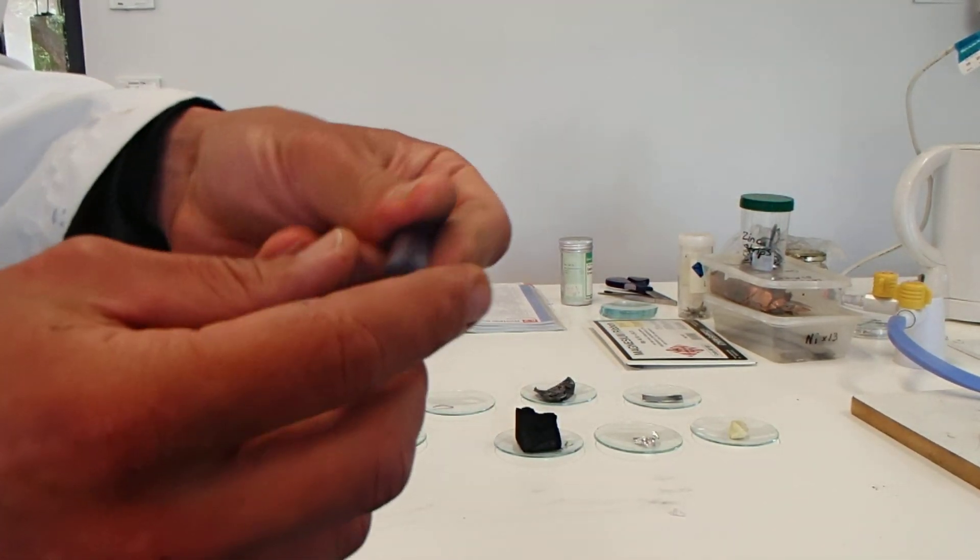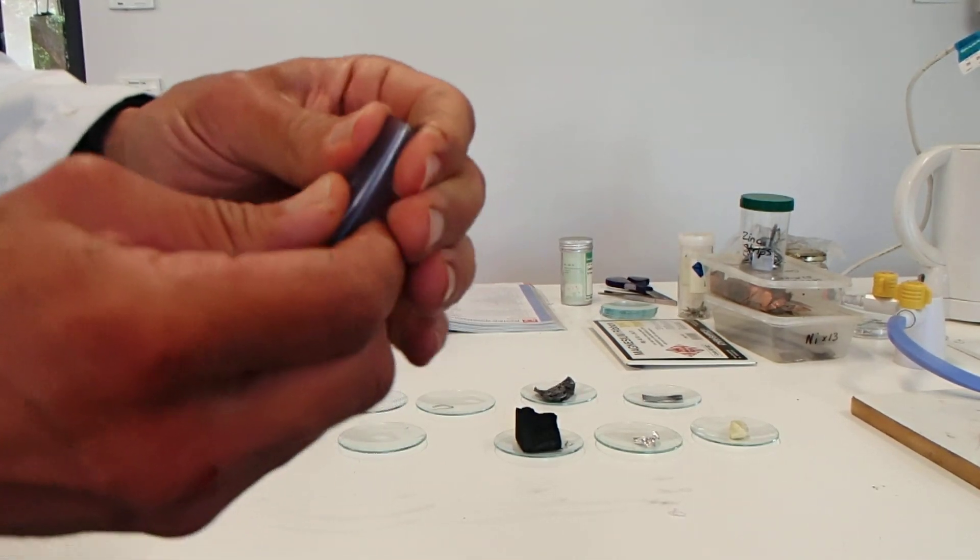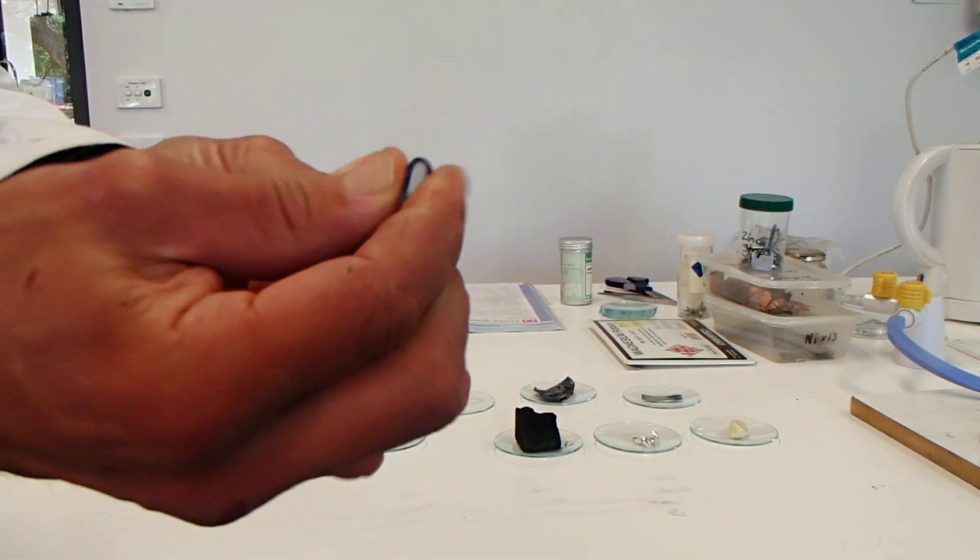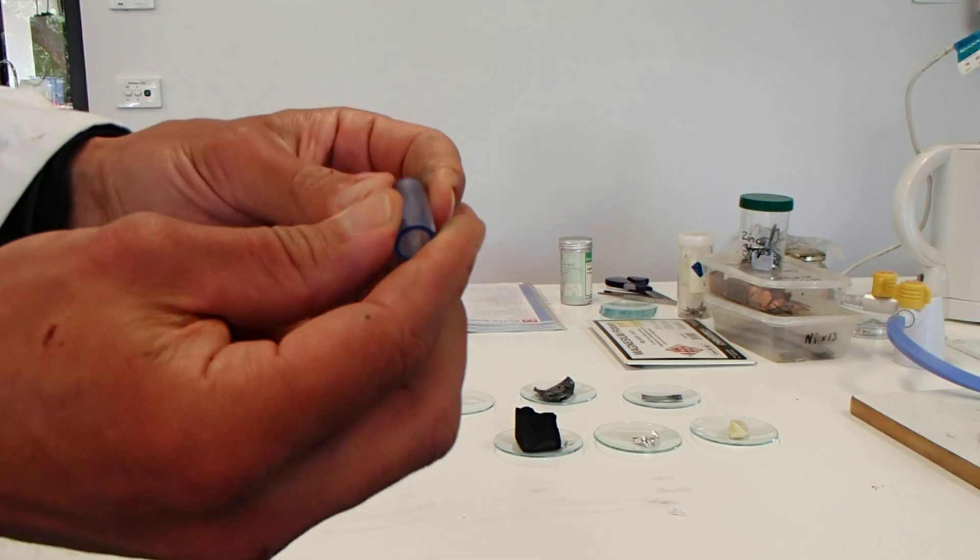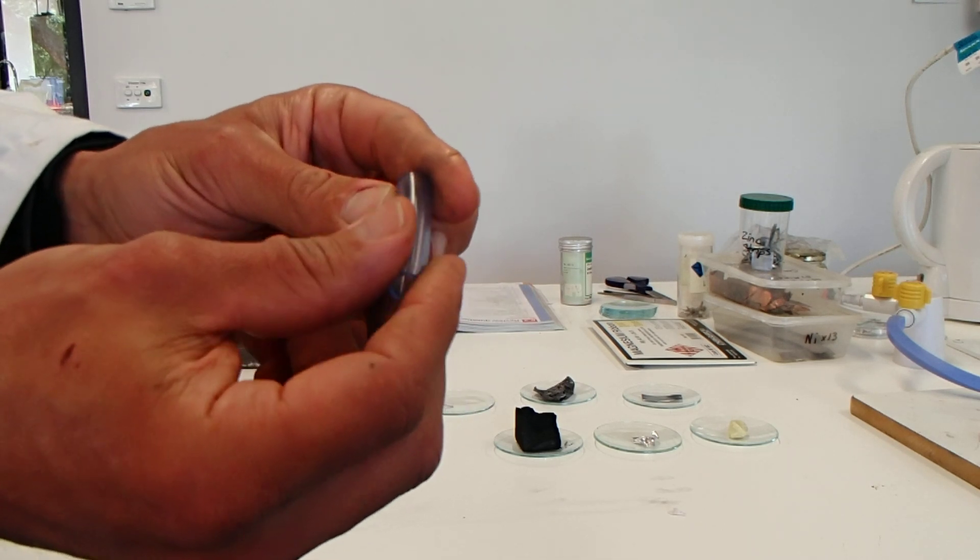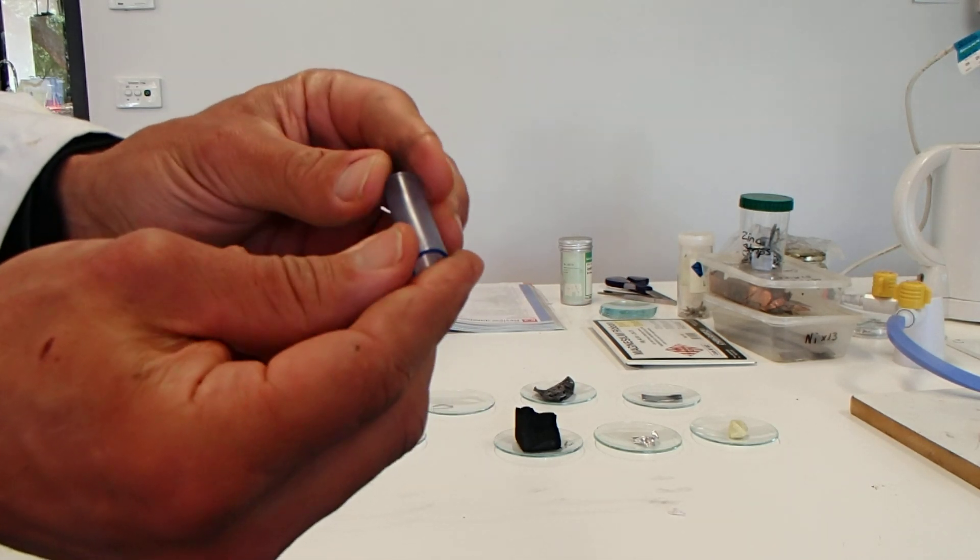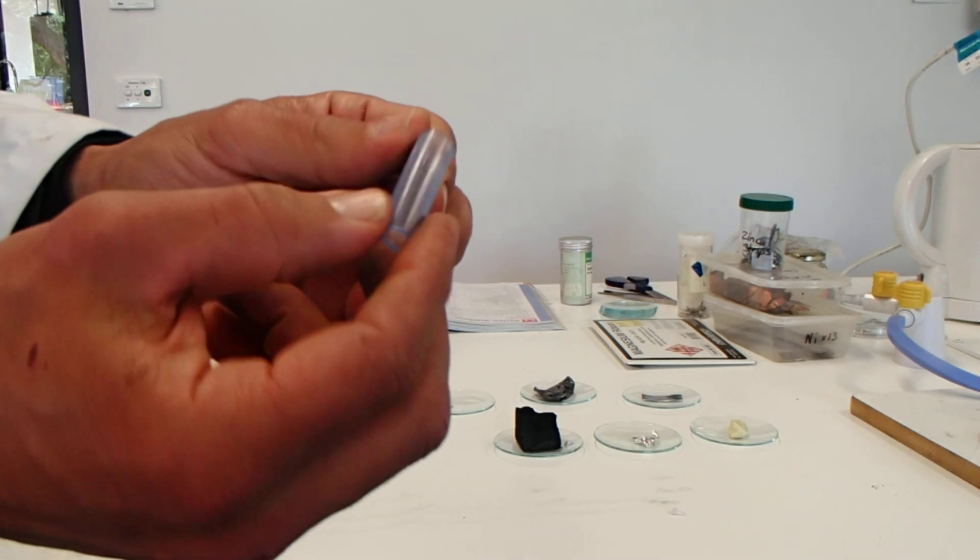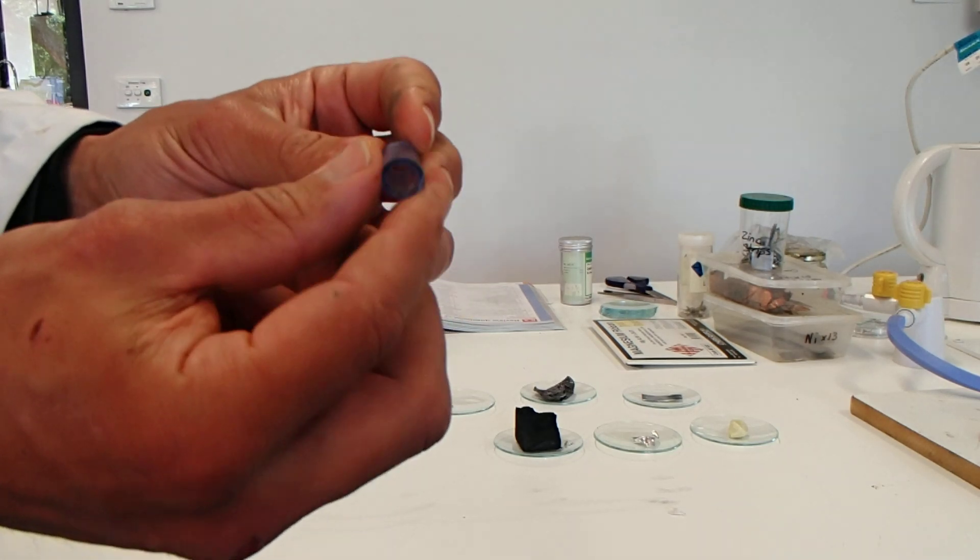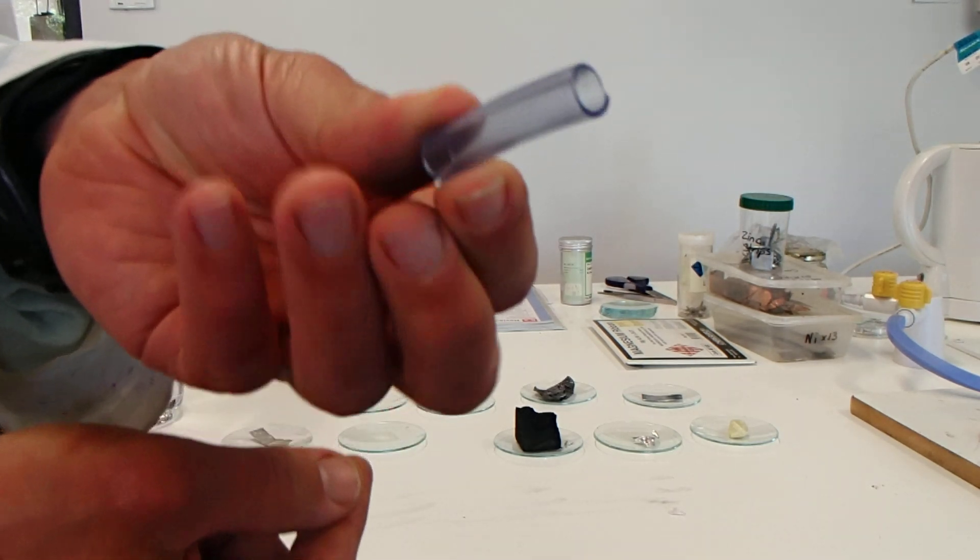Next we have silicon. It's clear, bendy—I can bend that easily with my fingers. It's smooth, transparent, a little bit shiny in its form like this. So that's silicon tubing.